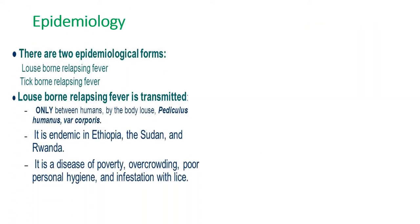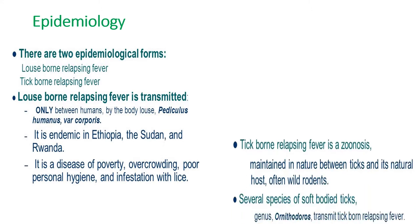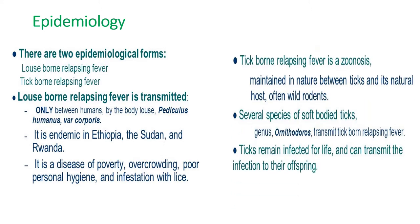The two types have their own epidemiologic forms. Louse-borne relapsing fever is transmitted only between humans by the body louse and is endemic in Ethiopia, Sudan, and Rwanda. It is a disease of poverty, overcrowding, poor personal hygiene, and infestation with lice. Tick-borne relapsing fever is a zoonosis maintained in nature between ticks and their natural hosts, often wild rodents, and ticks remain infected for life and can transmit the infection to their offspring.